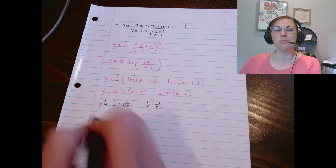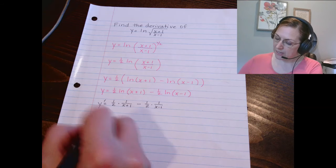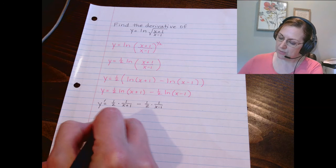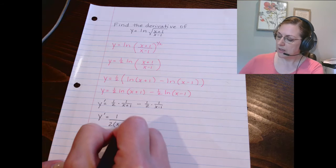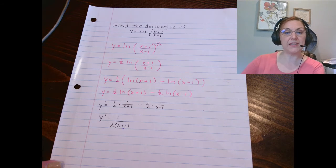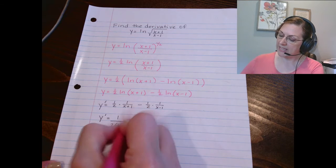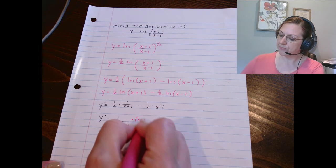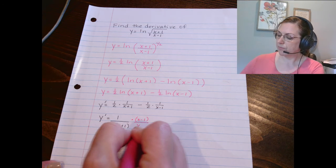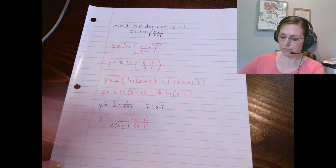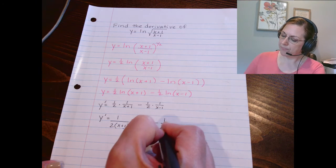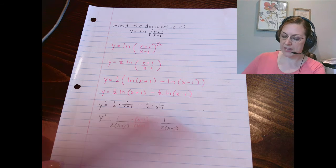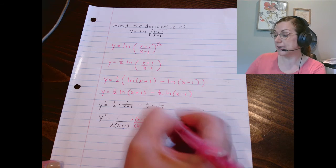Now, we probably are going to make a common denominator here, so let's do that. On the first fraction, I'm going to multiply the top and the bottom by the x minus 1.